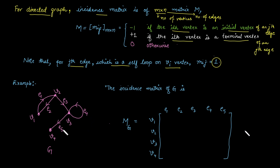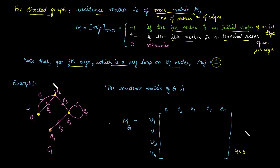For this directed graph G, count the vertices: 1, 2, 3, and 4, so the number of rows is 4. Count the edges: total edges are 5, so we have a 4 cross 5 matrix. Mention the ordering of vertices and edges. The first edge E1 starts from V1 and ends at V2. The initial vertex is V1 so its entry is −1, and the terminal vertex V2 has entry +1; the rest are 0.